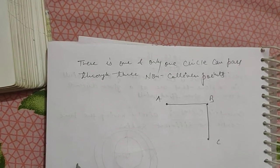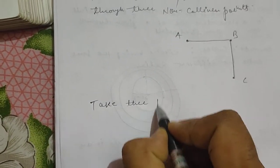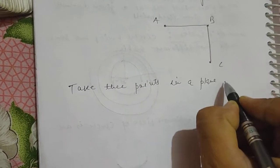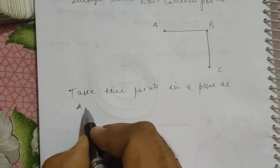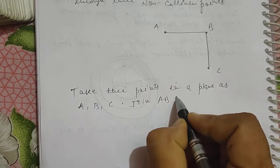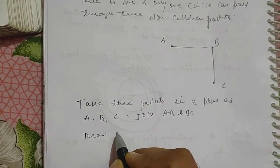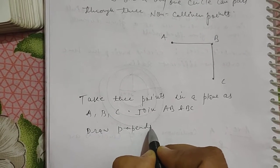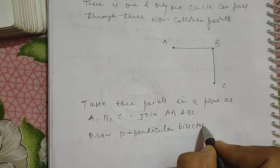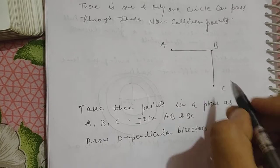Now draw - take three points in a plane as A, B and C. Join A, B and B, C. If you draw perpendicular bisectors of A, B and B, C.